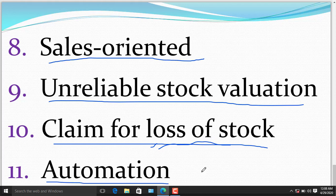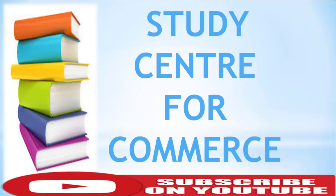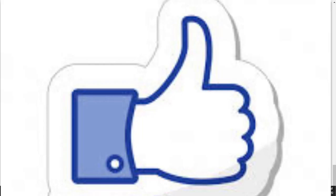The last limitation of marginal costing is automation. Nowadays, increasing automation is leading to increase in fixed cost. If such increasing fixed costs are ignored, the costing system cannot be effective and dependable. Marginal costing, if applied alone, will not be much use unless it is combined with other techniques like standard costing and budgetary costing. If you like the video, please subscribe and click bell icon and like. Thank you.